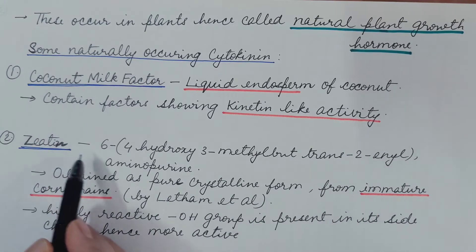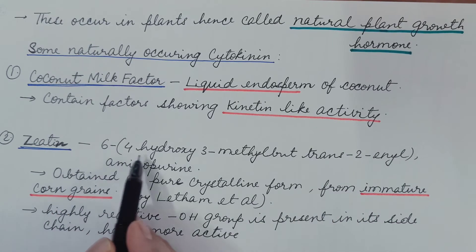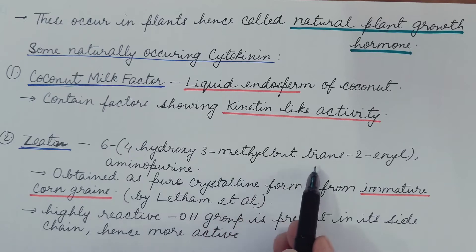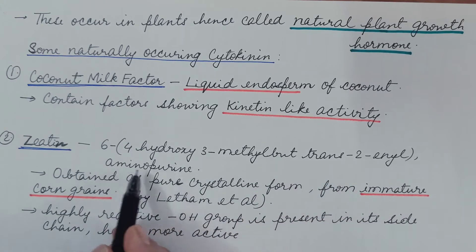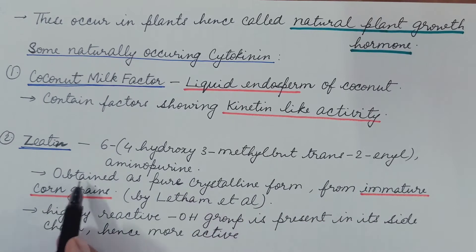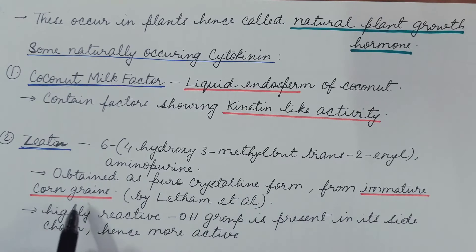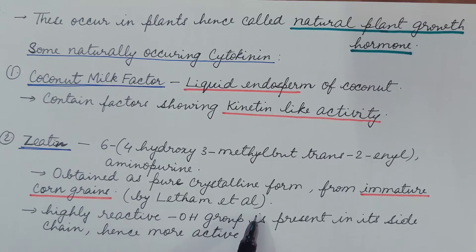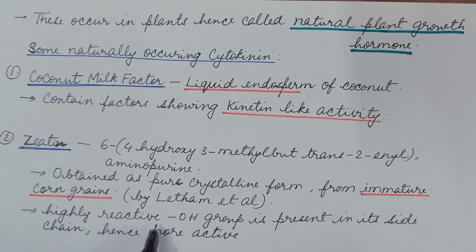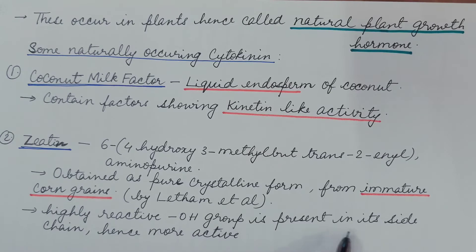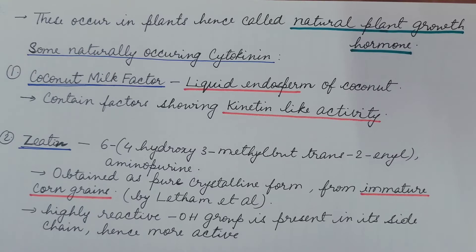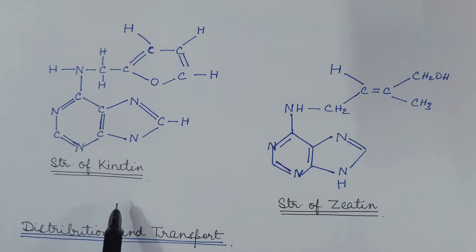Another naturally occurring cytokinin is zeatin, with chemical name 6-(4-hydroxy-3-methylbut-2-en-1-ylamino)purine. It was obtained in pure crystalline form from immature corn grains; hence the name zeatin. It is highly reactive because a hydroxyl group is present in its side chain, making it more active.